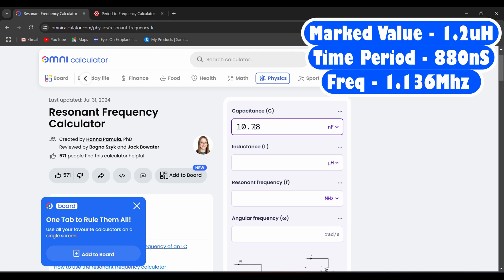This will give us our frequency in megahertz range, 1.136 MHz. So now we will go to the resonant frequency calculator. Our capacitor value was 10.78 nanofarads and our frequency was 1.136.